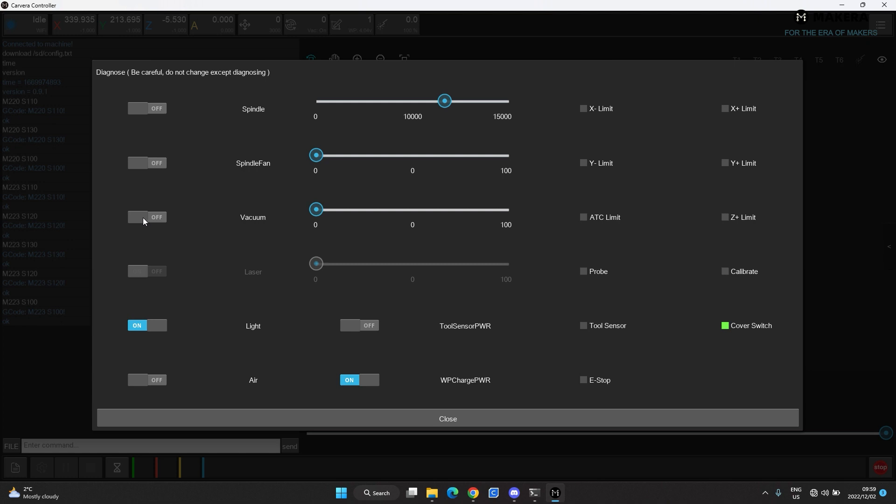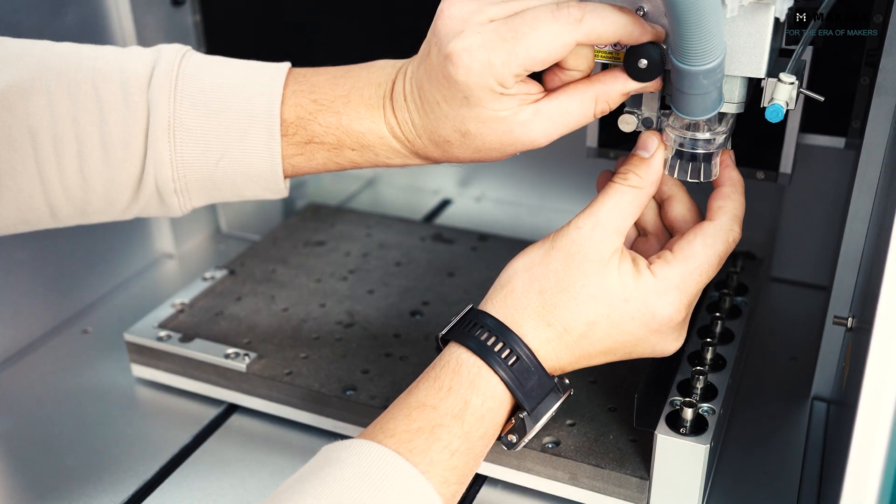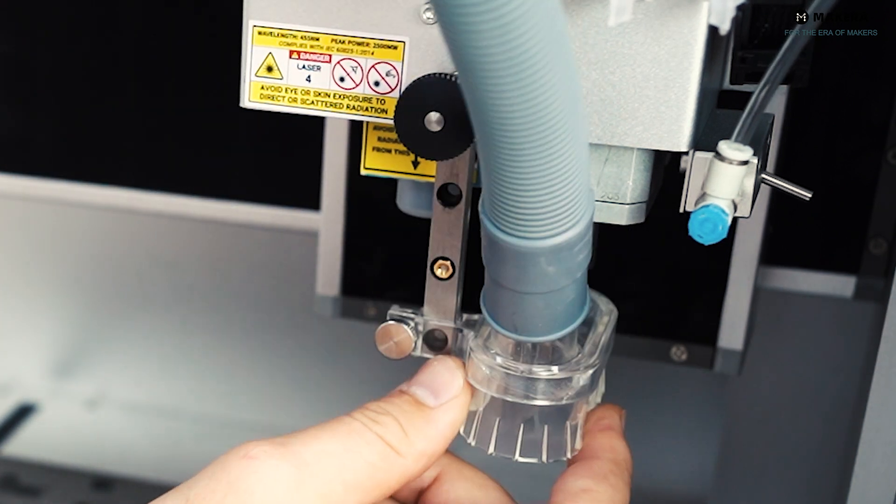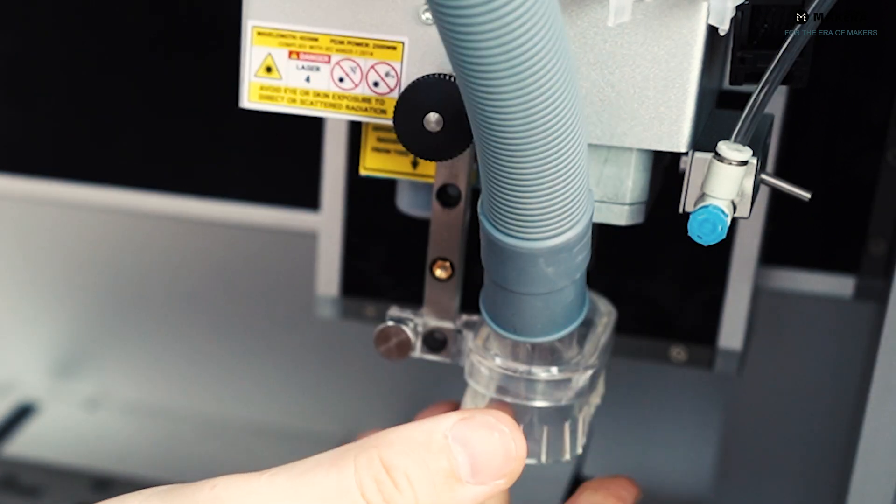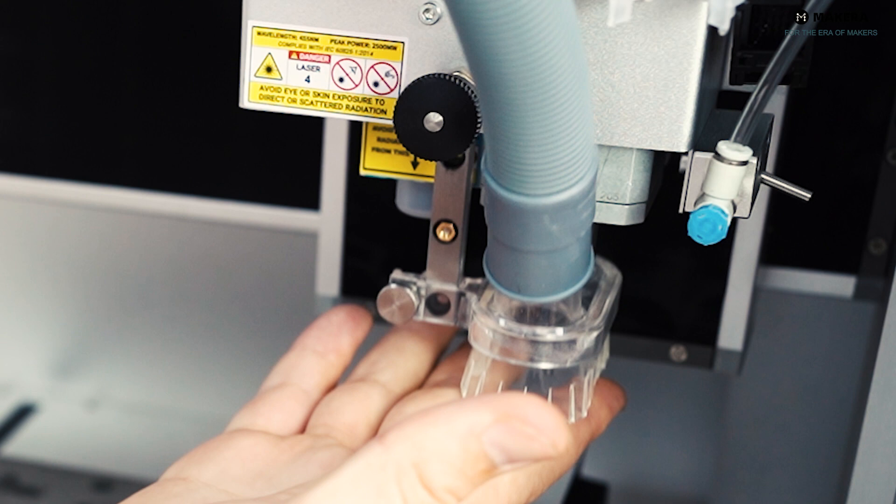The dust foot can be a bit tricky to release. It took me a few tries but to do this pull this knob and turn 30 degrees to the right and the foot will release. To lock again, pull and rotate back the 30 degrees.